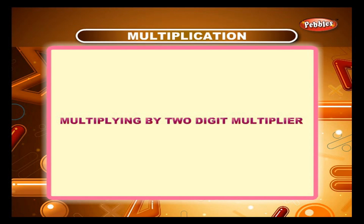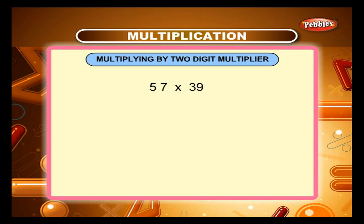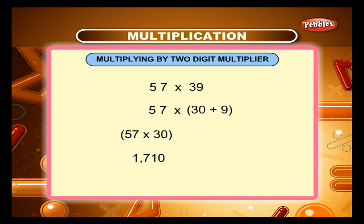Multiplying by a 2-digit multiplier. Let us see an example. Multiply 57 by 39. Split the second number as 30 plus 9. Multiply 57 by 30: 57 into 30 is equal to 1710. Then multiply 57 by 9: 57 into 9 is equal to 513. Now add the results: 1710 plus 513. We get 2223.